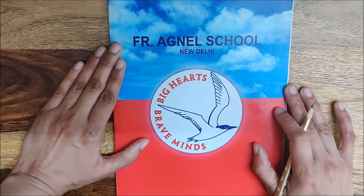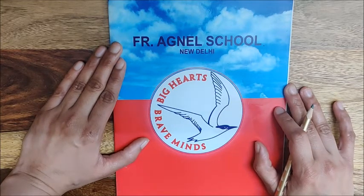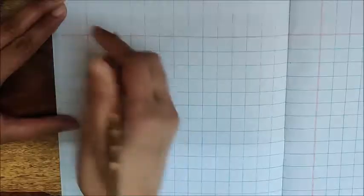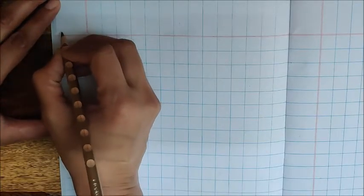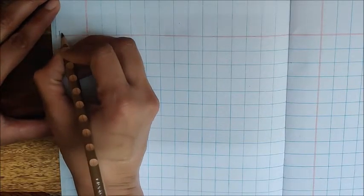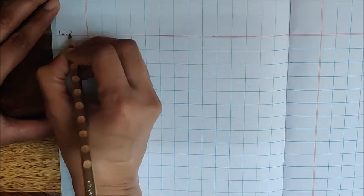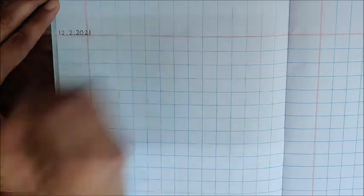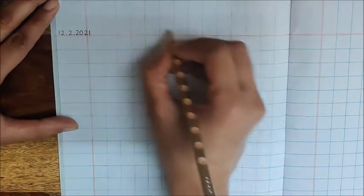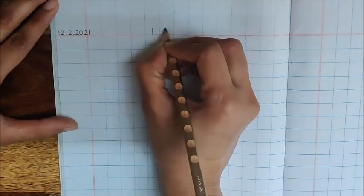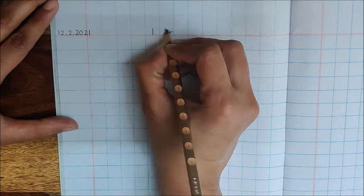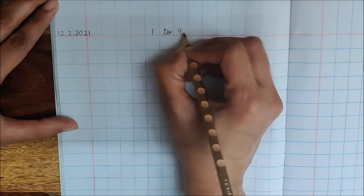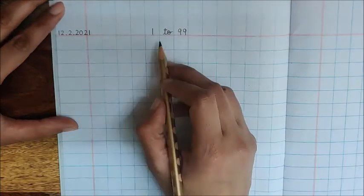So we have to practice writing numbers. Open a new page, write today's date, today's February 12, 12.2.2021, and here write down the heading 1 to 99.